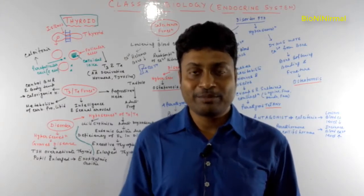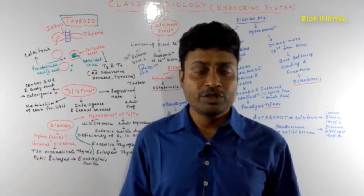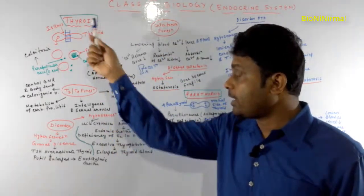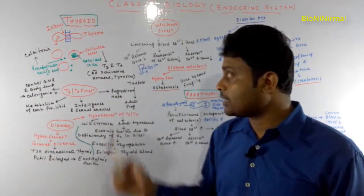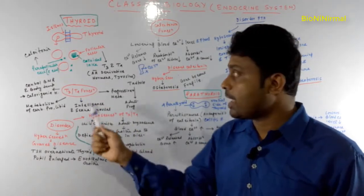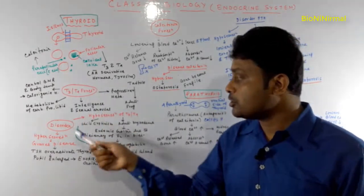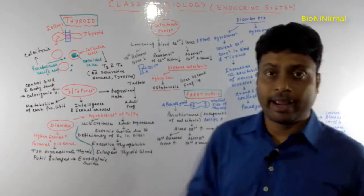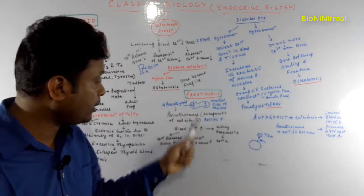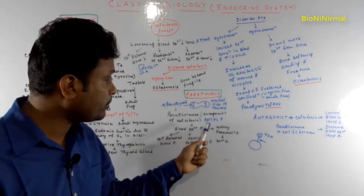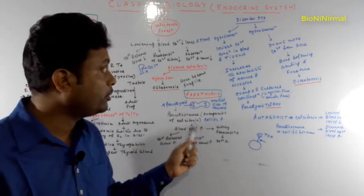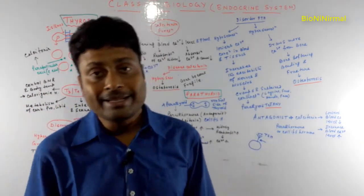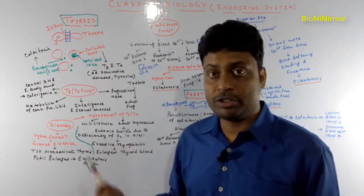Hello and welcome back. In this video tutorial, I am going to describe the thyroid gland and the hormones secreted from it — that is thyroxine, T3, T4, and calcitonin — and also the disorders related with the thyroid gland. Another important gland is the parathyroid gland, along with the hormone secreted from it, parathormone, its function, and the disorders related with parathormone.